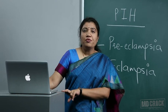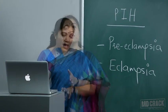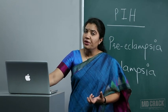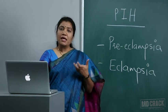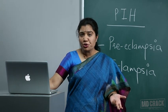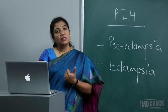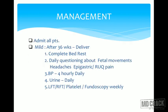Fetal effects of PIH: because of complications, early delivery is often needed, so prematurity is the most common fetal side effect. Defective placentation and vasoconstriction reduce substrate supply to the fetus, leading to IUGR. There can be sudden intrauterine death due to abruption or acute-on-chronic asphyxia. During labor, IUGR babies cannot sustain the stress of labor, leading to intrapartum asphyxia and increased chances of operative delivery.